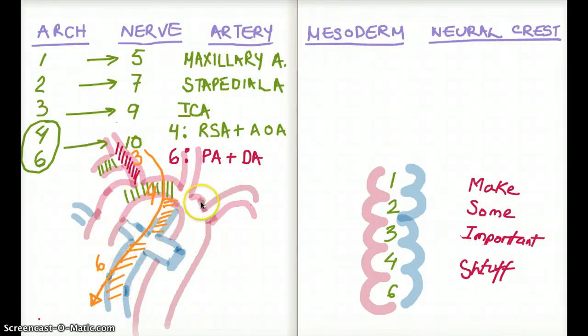So whenever I'm thinking of brachial apparatus or pharyngeal apparatus, I think about this pattern that okay, 3 is going to be at the top, 4 is going to be right below that and followed by 6.